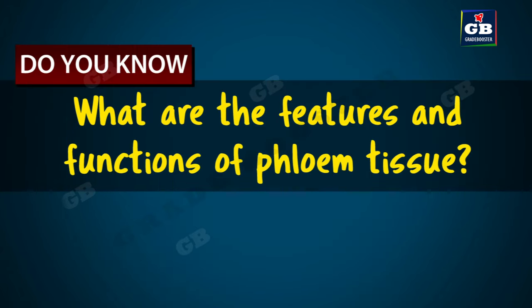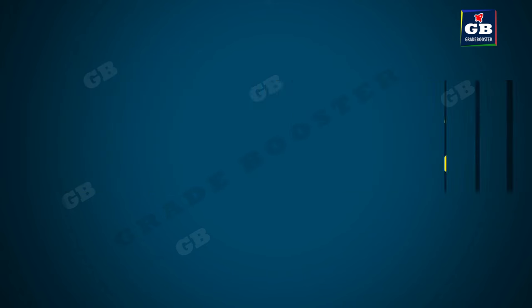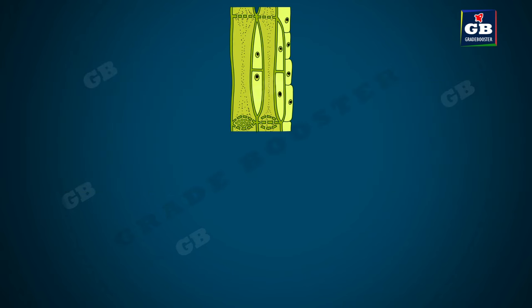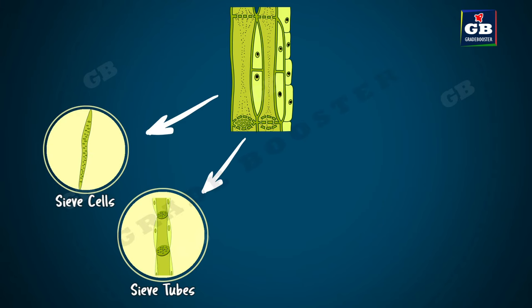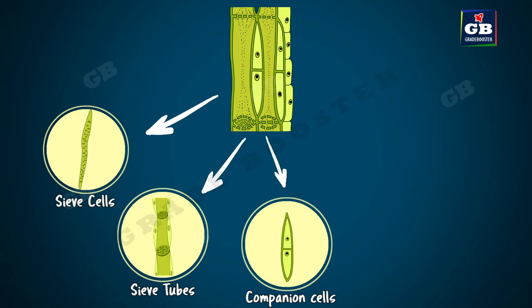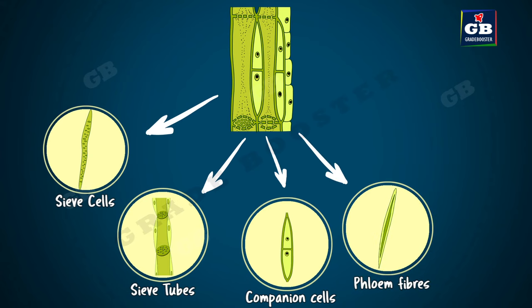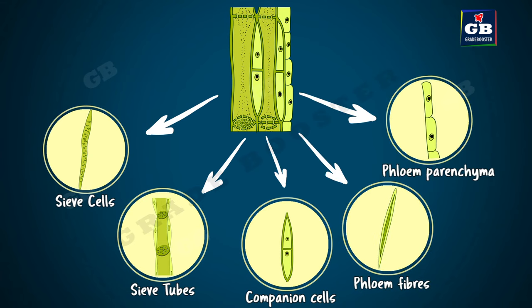What are the features and functions of phloem tissue? Phloem is made up of five types of cells. They are sieve cells, sieve tubes, companion cells, phloem fibers, and phloem parenchyma.